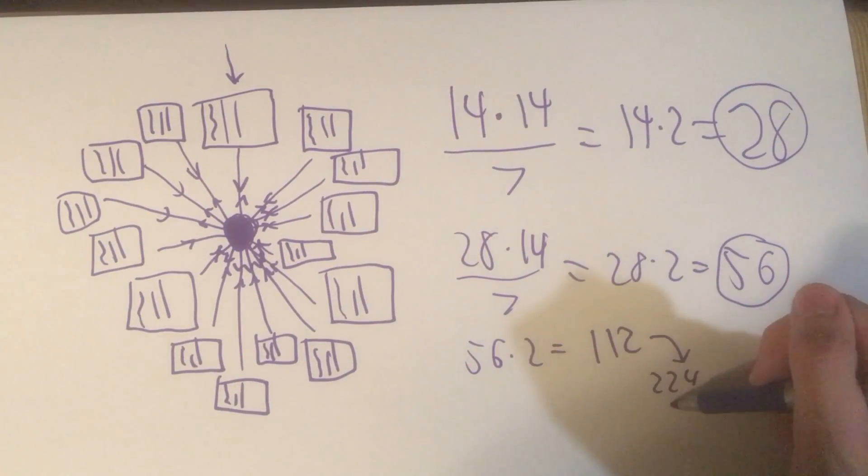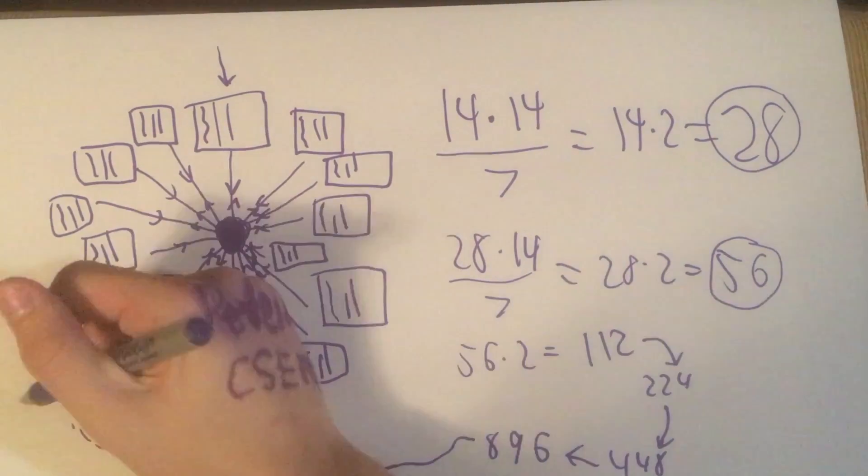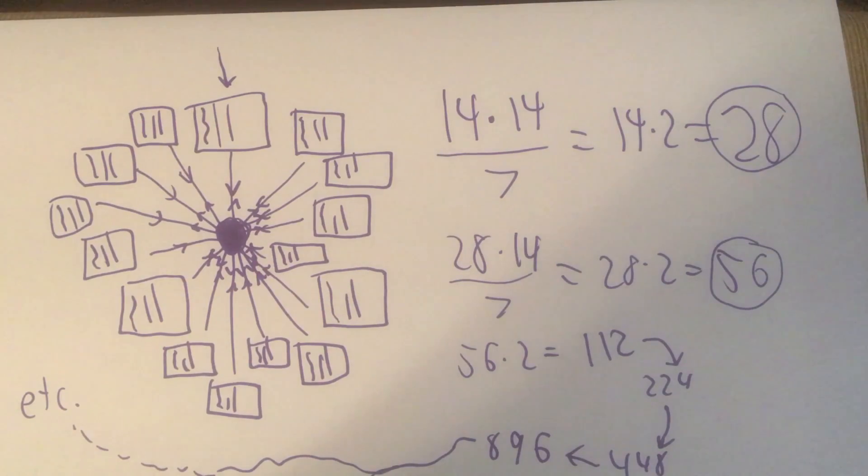which then turns into 112, then 224, 448, 896. Yeah, considering this, it's pretty easy to see how the worm got out of control.